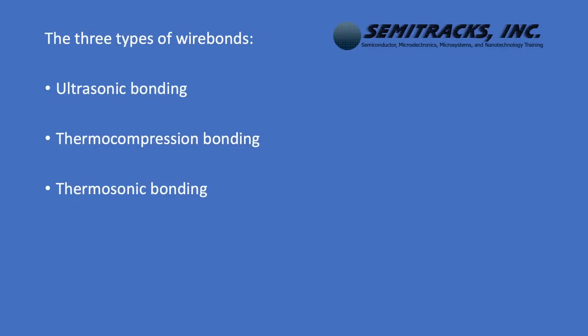There are three basic types of wire bonds that can be made: ultrasonic bonding, thermocompression bonding, and thermosonic bonding.